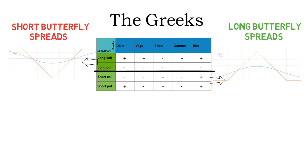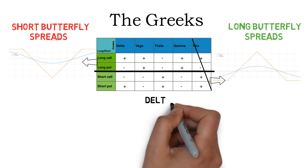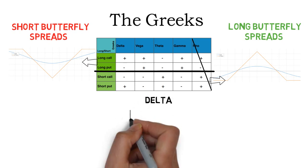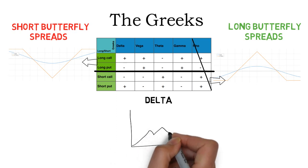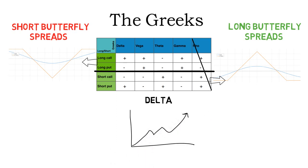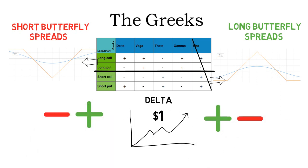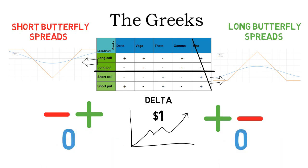Before I explain the impact of every Greek more thoroughly, I just want to say that you can disregard rho for now, as it really isn't that important for shorter term option spreads. Let's start with delta. Delta measures the change in the options price for a $1 move up in the underlying. But as butterfly spreads are neutral strategies, there is both a plus and a minus, meaning that delta often is just around zero.